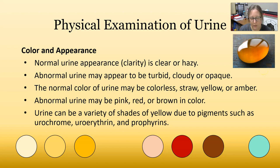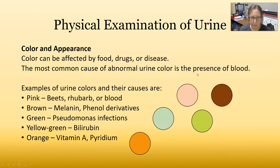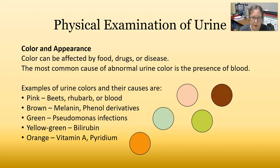Urine can also be a variety of shades of yellow due to pigments such as urochrome, uroethrin, and porphyrins. The color can be affected by food, drugs, or disease. The most common cause of an abnormal urine color is the presence of blood. Examples of colors and their causes: pink urine could be beets, rhubarb, or blood.